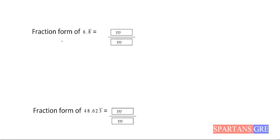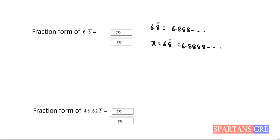Let's get started. Our first question is 6.8̄, meaning the number is 6.8888... and so on — 8 is recurring infinitely. So I will take this 6.8̄ as x, which means x = 6.8888... If I take 10x — that is, multiply both sides by 10 — this number becomes 68.888... and so on.